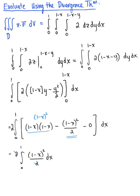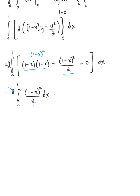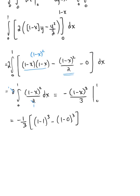Using a general antiderivative or u-substitution, this integrates to minus (1 minus x)³ over 3 evaluated from 0 to 1. Evaluating: minus one-third times [(1 minus 1)³ minus (1 minus 0)³] equals minus one-third times [0 minus 1] equals minus one-third times negative one, giving a final answer of 1/3.